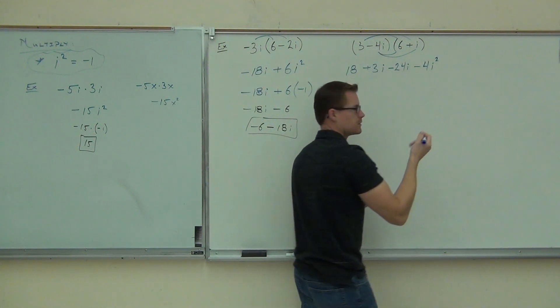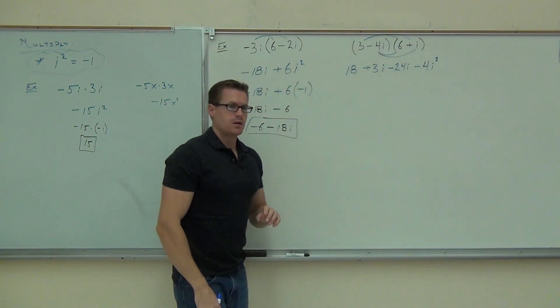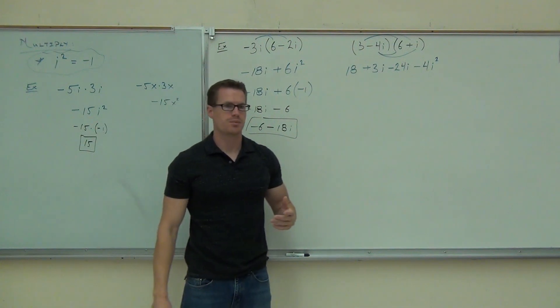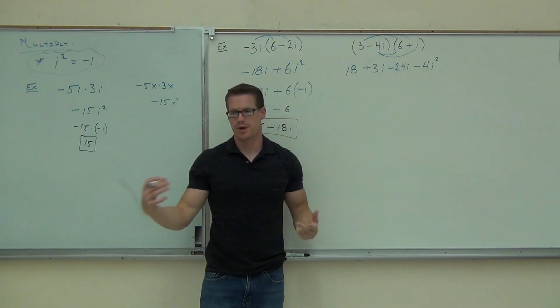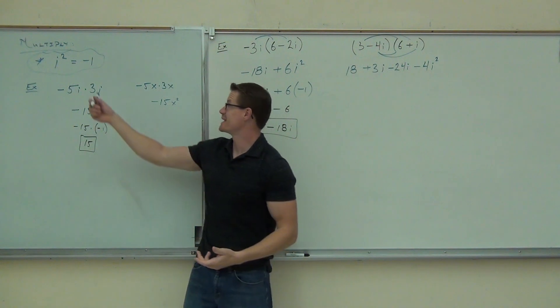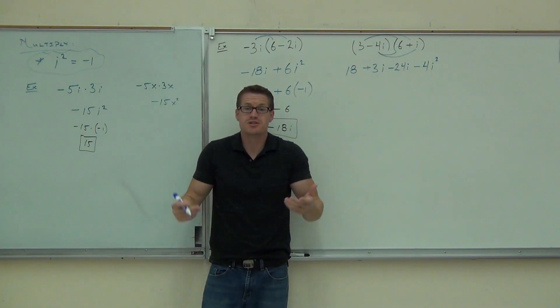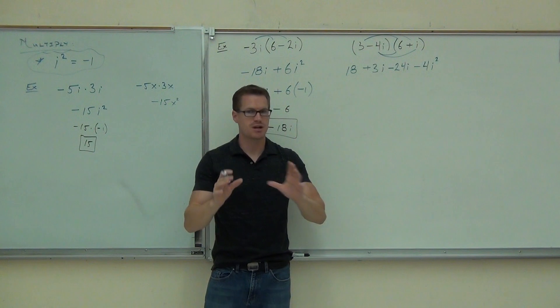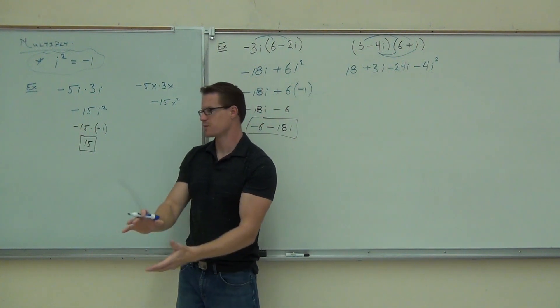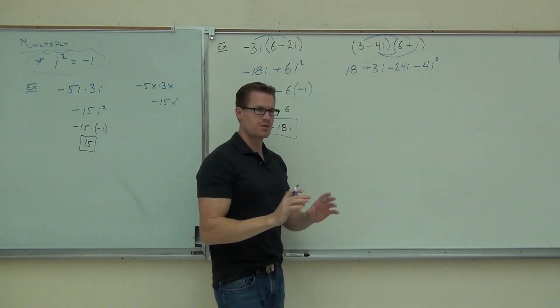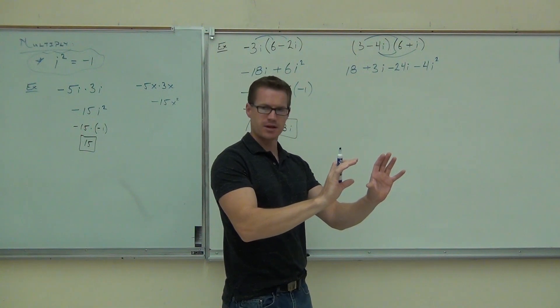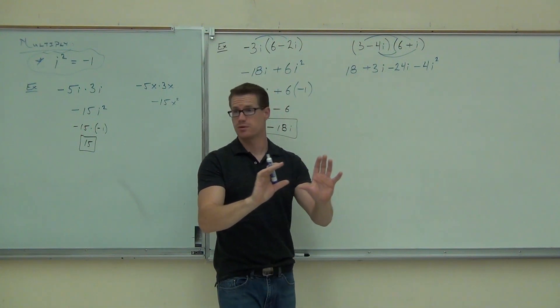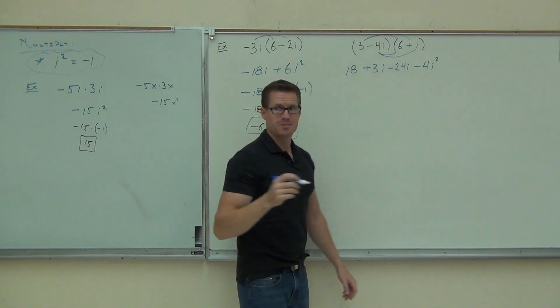Inside a complex number, you have two choices. You have something with i or you have a number. You can't ever end with an i squared. There's no such thing as having i squared at the end of your problem. You can always simplify it. Always. So you'll either have numbers or i's. Never have an i squared, i cubed, i to the fourth, never. It doesn't happen.